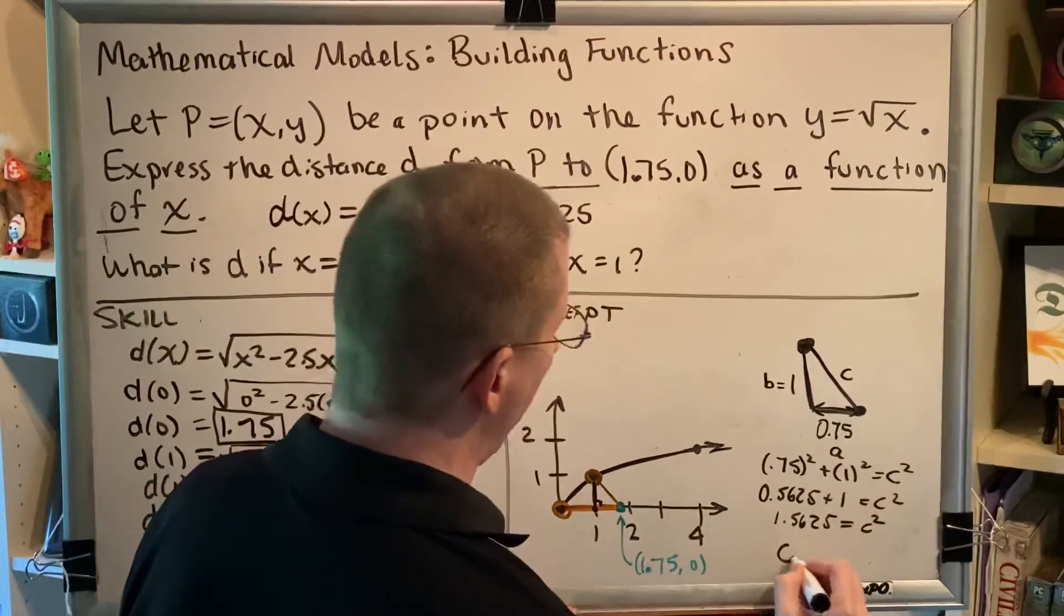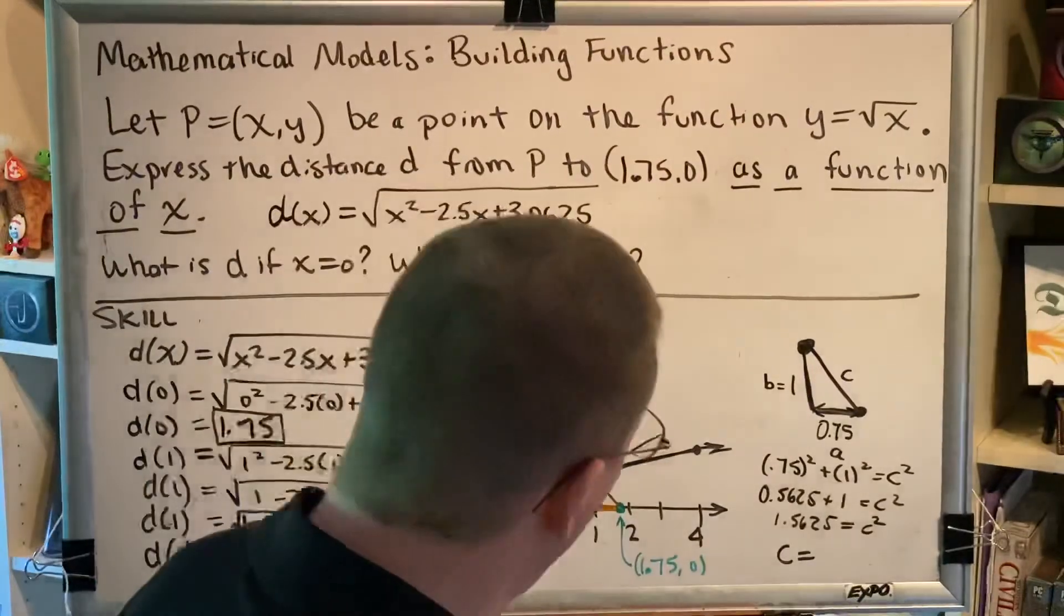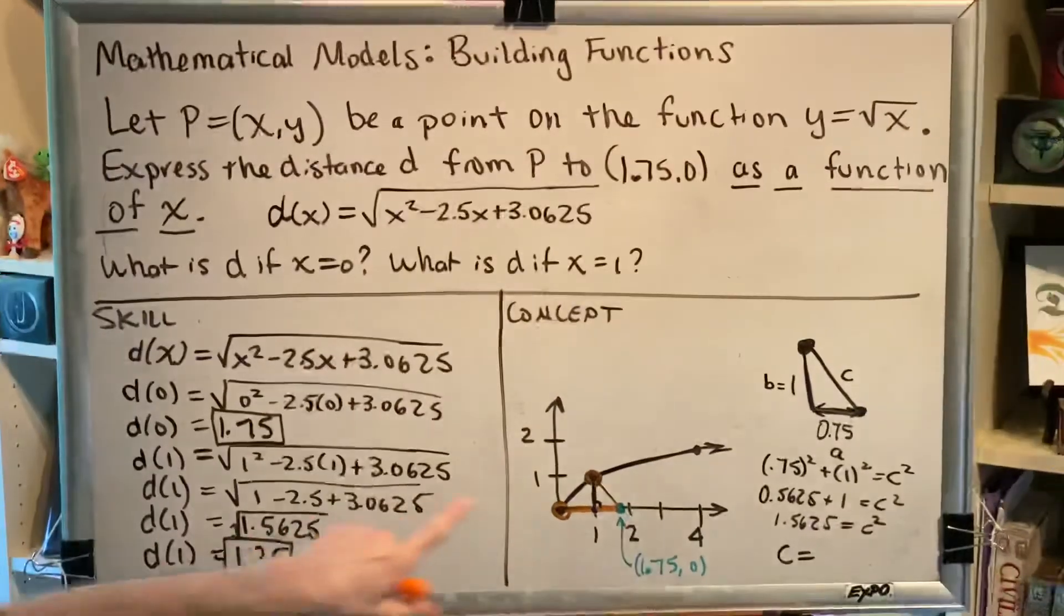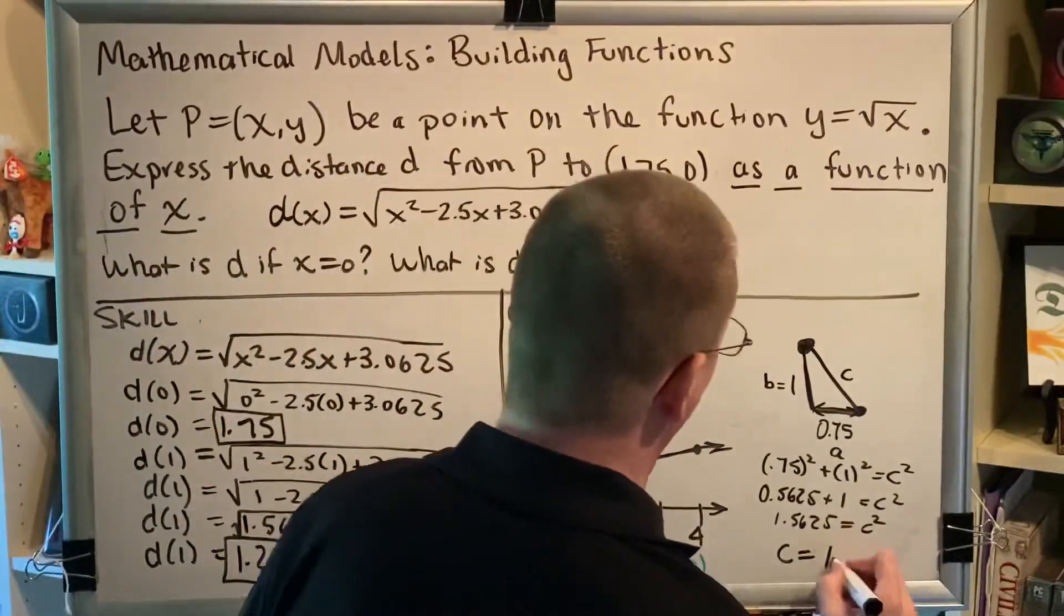Take the square root of both sides, which will tell you c. We need to know the square root of 1.5625 and we get 1.25.